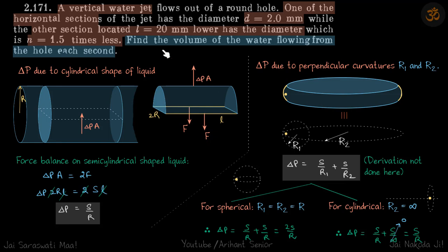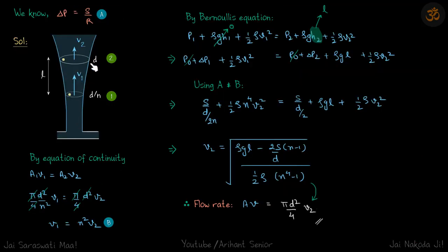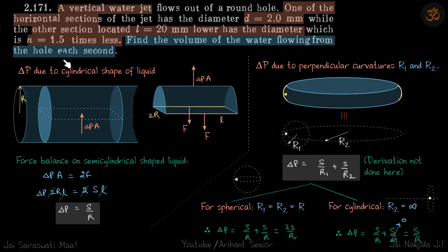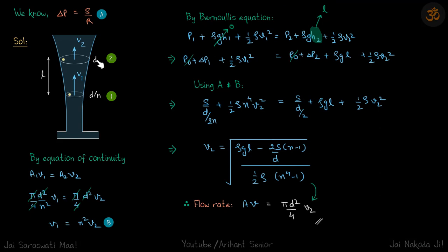Coming back to our problem: we have a water jet where at a distance L the diameter goes from d to d/n. We need to find the volume flow rate. We can write one equation for continuity and one for Bernoulli. For the Bernoulli equation we will need the pressures at each point, which we get from the excess pressure formula. By the equation of continuity, A1·v1 = A2·v2, which gives v1 = n²·v2.